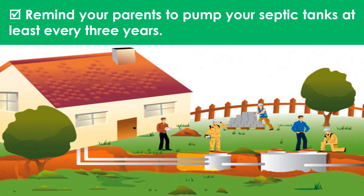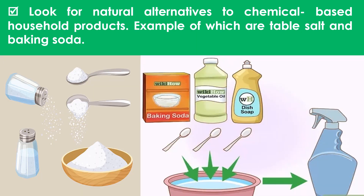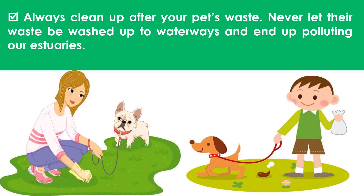Remind your parents to pump your septic tanks at least every 3 years. Use non-toxic pesticides — for example, a mixture of soap water and chili pepper. Excessive use of toxic pesticides can pollute nearby waterways. Look for natural alternatives to chemical-based household products, such as table salt and baking soda. Always clean up after your pet's waste; never let it wash into waterways and pollute our estuaries.